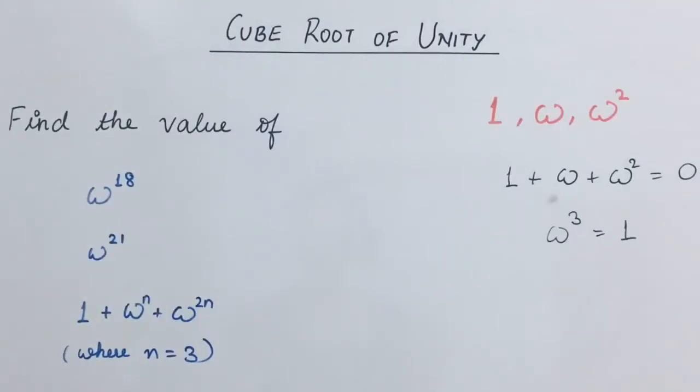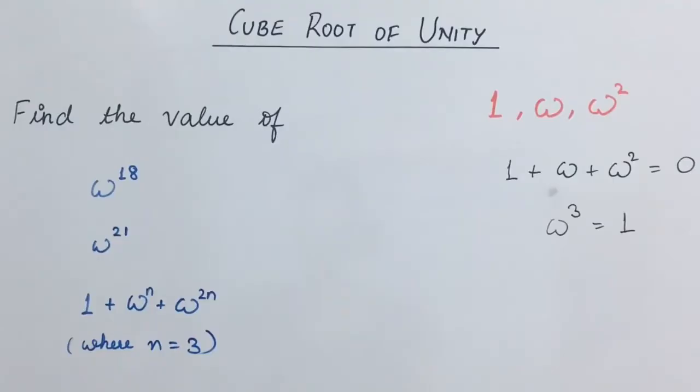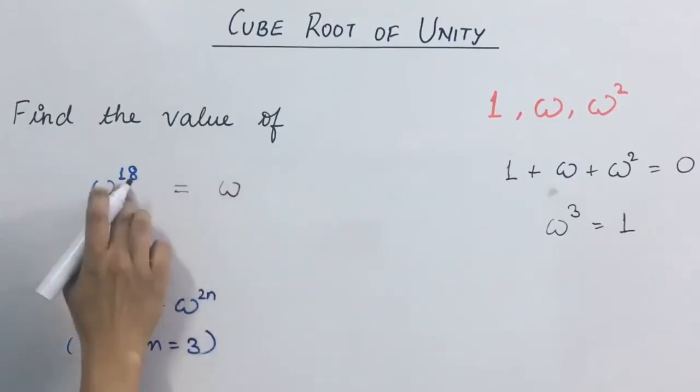Now let us solve some questions on cube root of unity. Find the value of omega 18, omega 21, and 1 plus omega n plus omega 2n where n equals to 3. In the first case, this can be written as omega raised to 3 into 6, or 18.